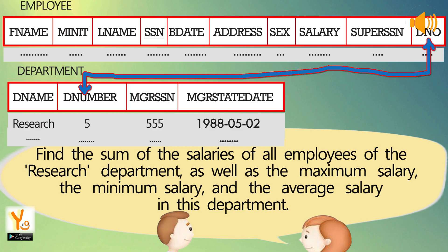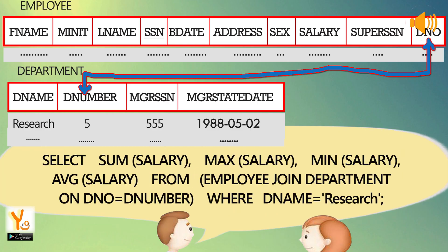Find the sum of the salaries of all employees of the research department, as well as the maximum salary, the minimum salary, and the average salary in this department. SELECT SUM(salary), MAX(salary), MIN(salary), AVG(salary) FROM employee JOIN department ON Dno = Dnumber WHERE Dname = 'Research'.